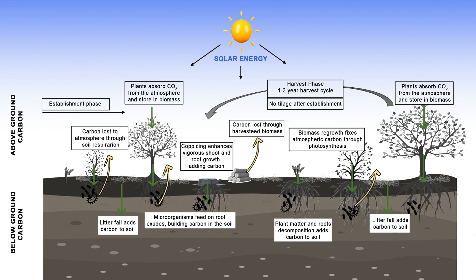The root structure of biomass crops after establishment continuously grows throughout the life cycle of the plant, storing and transferring carbon to the soil. The frequent harvest of above ground biomass enhances vigorous shoot regeneration and root turnover, which enhances soil carbon stock.